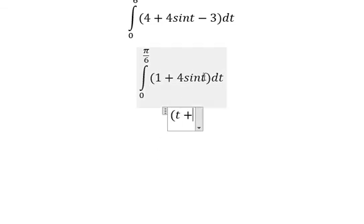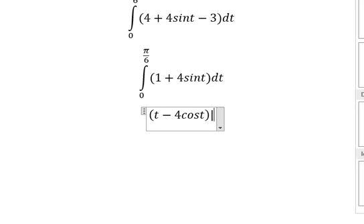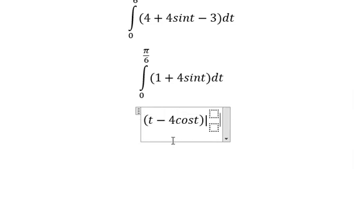The integration of sine t, we have negative cosine t, and we put the bounds from 0 to pi over 6.